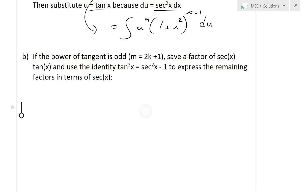If the power of tangent is odd, we write m = 2k + 1, where k ≥ 0 and is an integer. So if you put 0 inside, m = 1; if k = 1, you get 2 + 1 which is 3, and it goes 1, 3, 5, 7, etc.